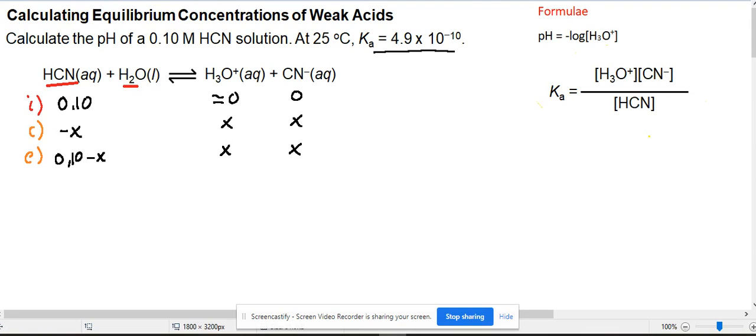Now we can calculate the equilibrium constant. This is products over reactants, Ka for the acid, using concentrations at equilibrium. So Ka equals the concentration of H3O+ (which is X) times the concentration of CN- (X) over the acid concentration (0.1 minus X). That equals the given constant, which is very small: 4.9 times 10 to the negative 10.